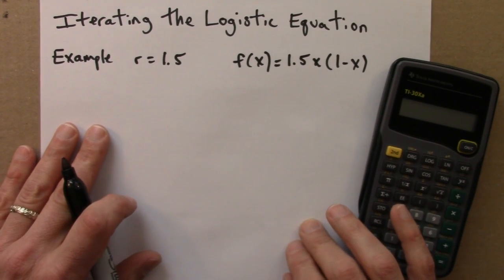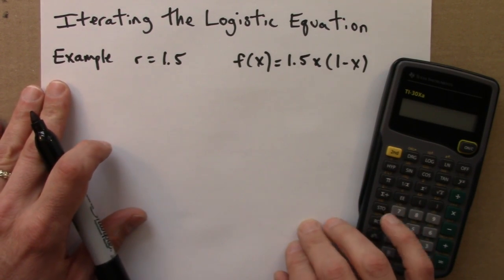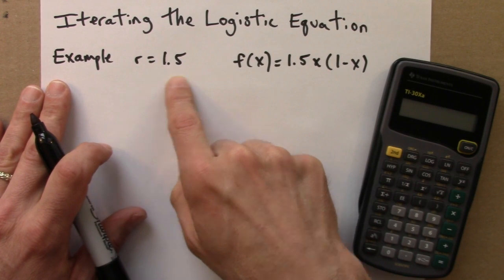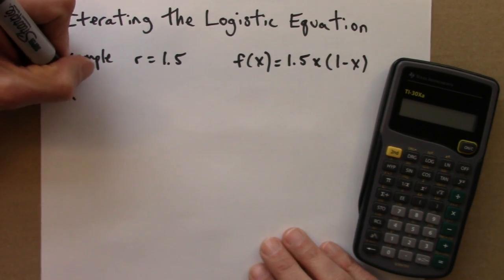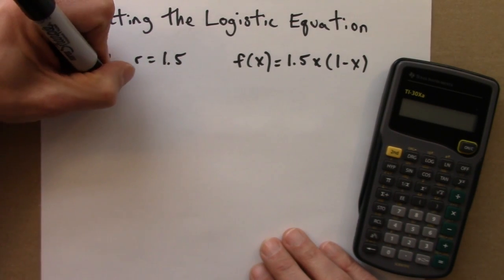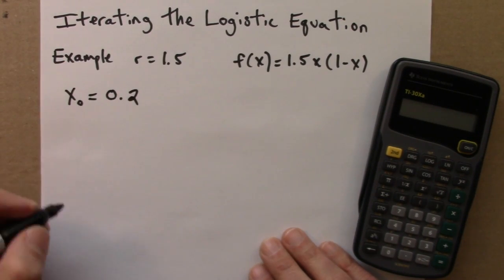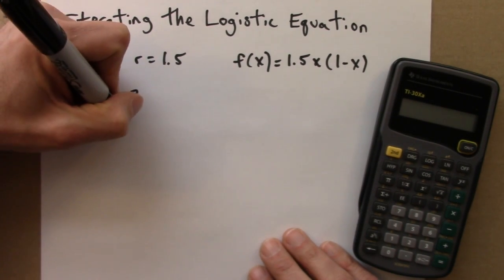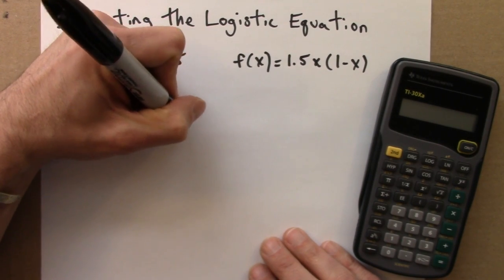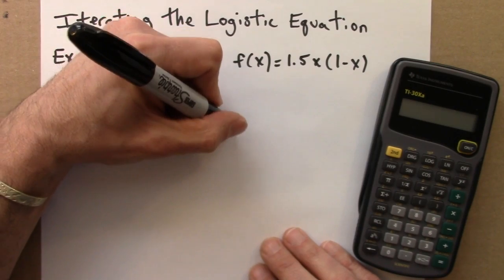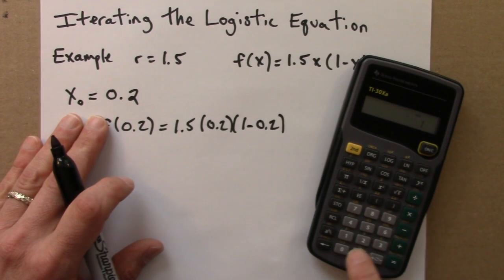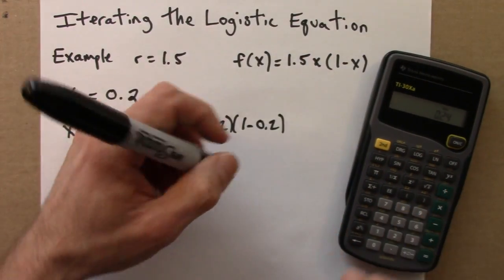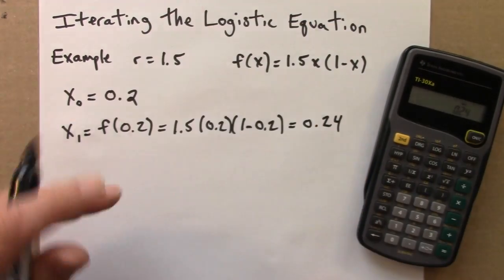Let me do a quick example just to review the idea of iterating a function. So I'll iterate the logistic equation, and I'll let r equals 1.5. So the function I'll be working with is f of x is 1.5x, 1 minus x. I need to choose a seed. So I'll say, let's see what happens if x0 is 0.2. So then the first iterate is obtained by applying the function to the seed. So that's 1.5 times 0.2 times 1 minus 0.2. So I'll do that on a calculator. And I get 0.24.